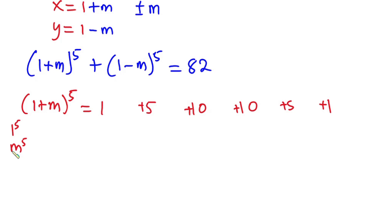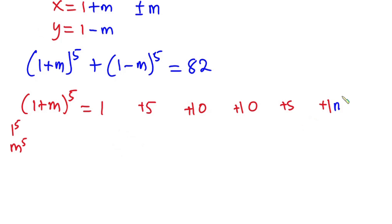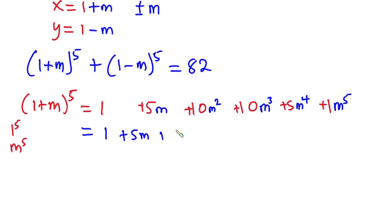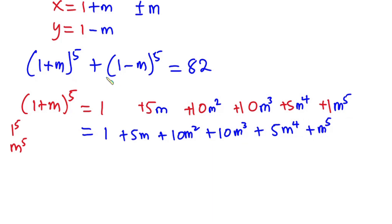The powers of m decrease from m⁵ down to m⁴, m³, m², m, and m⁰ which is 1. So the full expansion of (1 + m)⁵ is: 1 + 5m + 10m² + 10m³ + 5m⁴ + m⁵.